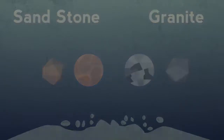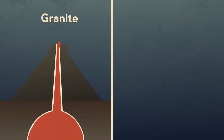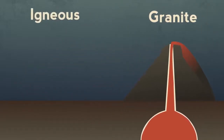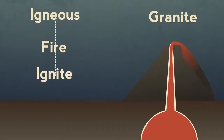These are the two main types of rock. Granite is formed by molten rock solidifying — an igneous rock. Igneous comes from the Latin word meaning fire. Think of the word ignite.